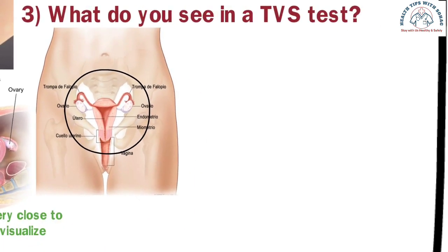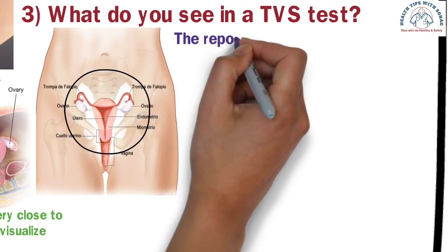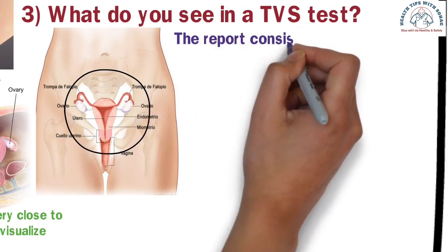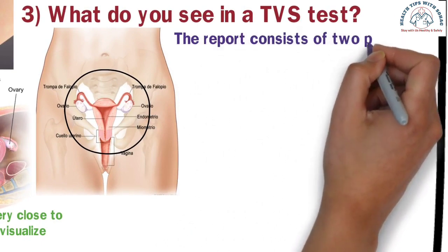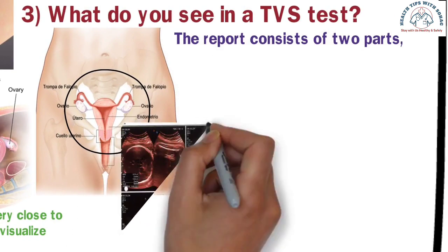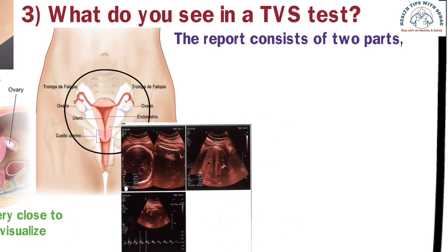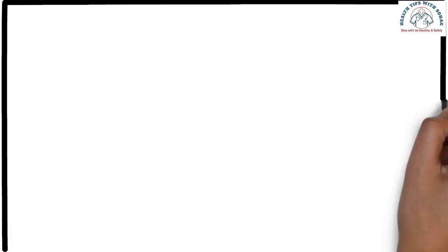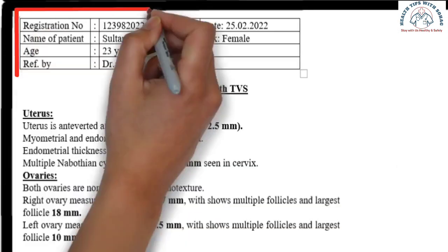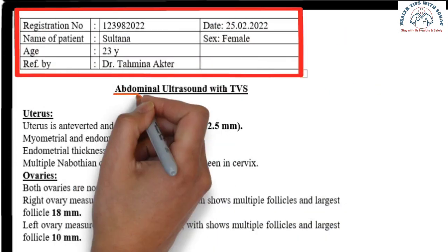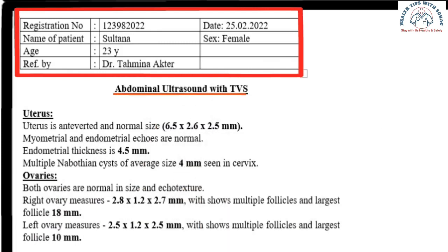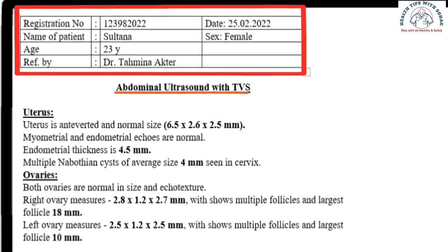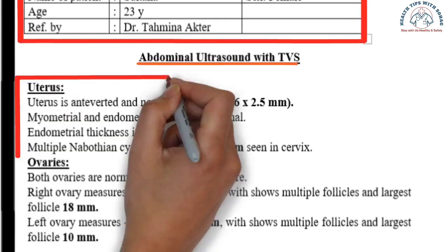To understand this topic, we will look directly at a report so that we can understand it better. The report consists of two parts: one part has some pictures, and the other part contains detailed writing. The upper part of the report has the patient's detailed information. After that, it says 'abdominal ultrasound with TVS,' which means the ultrasound is first done on the abdomen and then the TVS examination is performed.